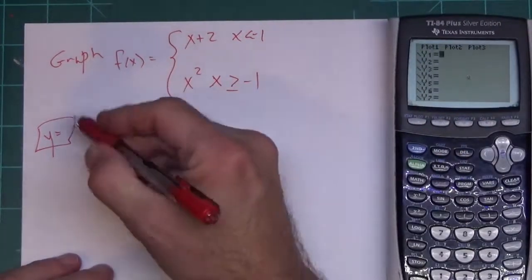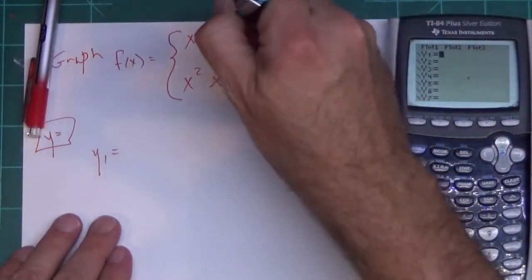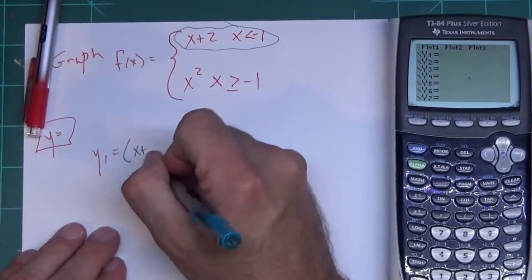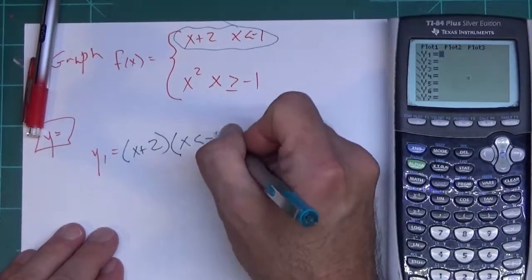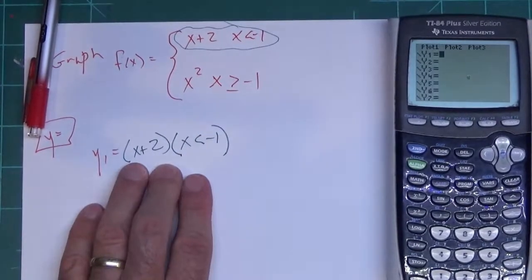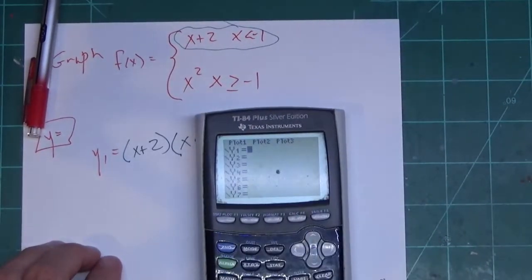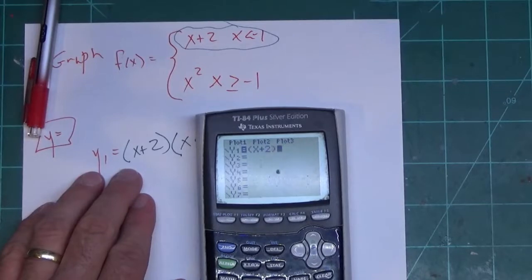So in Y1, when I go to type this first part right here, I'm going to put parenthesis, X plus 2, parenthesis, X less than negative 1. This is how you type it for the calculator to recognize it is piecewise. So I'm going to put parenthesis, X plus 2, close parenthesis, parenthesis.